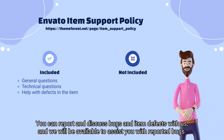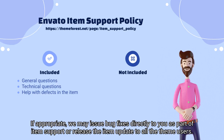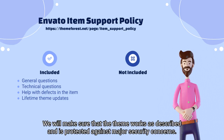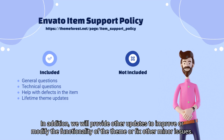You can report and discuss bugs and item defects with us, and we will be available to assist you with reported bugs. If appropriate, we may issue bug fixes directly to you as part of item support or release an item update to all theme users. You are entitled to all updates of the theme as long as the theme is available on the market, regardless of the duration of your support period. We will make sure that the theme works as described and is protected against major security concerns. In addition, we will provide other updates to improve or modify the functionality of the theme or fix other minor issues.